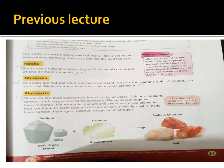Minerals are made from one or more elements. Then we talked about elements. Elements are pure substances found in the universe. Chlorine, sodium, carbon and oxygen are some of the elements. Elements join together to form minerals. For example, sodium and chlorine are two elements that combine to form sodium chloride, or salt.